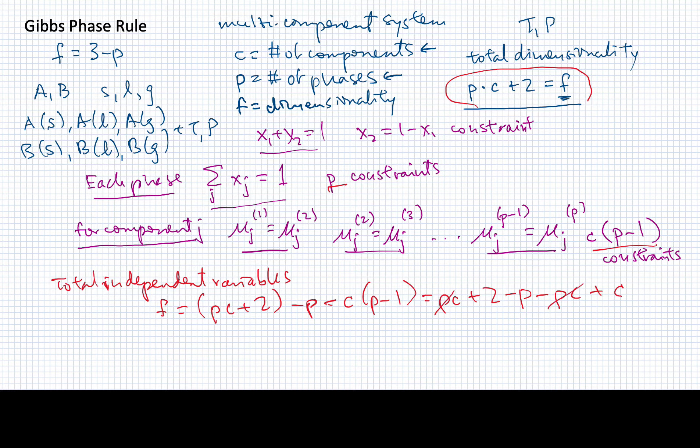So I'll have pc plus 2 minus p minus pc plus c. So, obviously, the pc products will disappear, and in the end, I'll end up with the number of degrees of freedom is going to be the number of components plus 2 minus the number of phases.